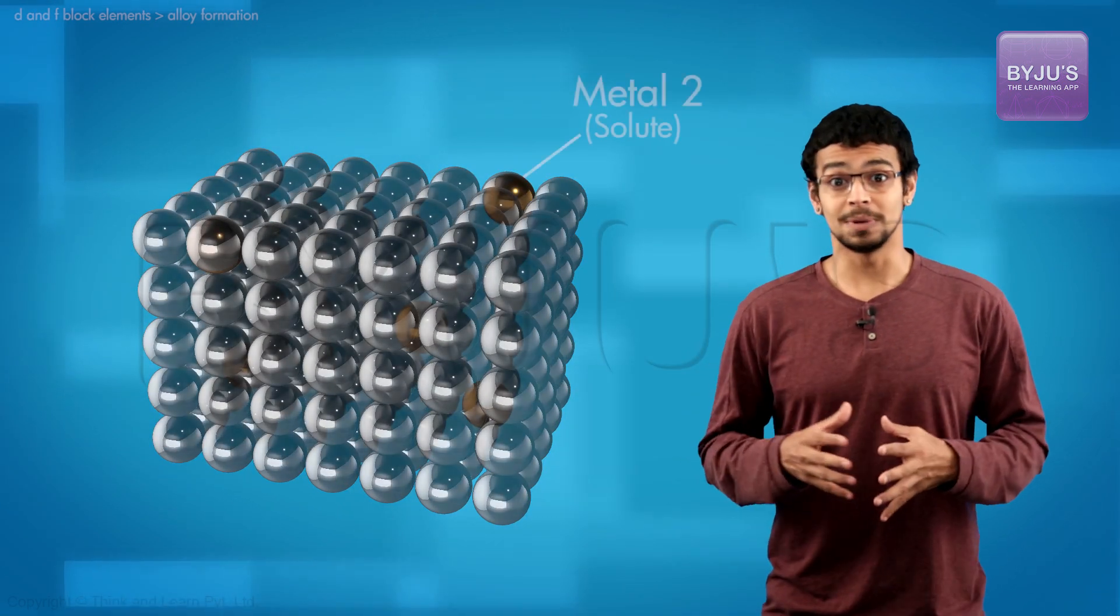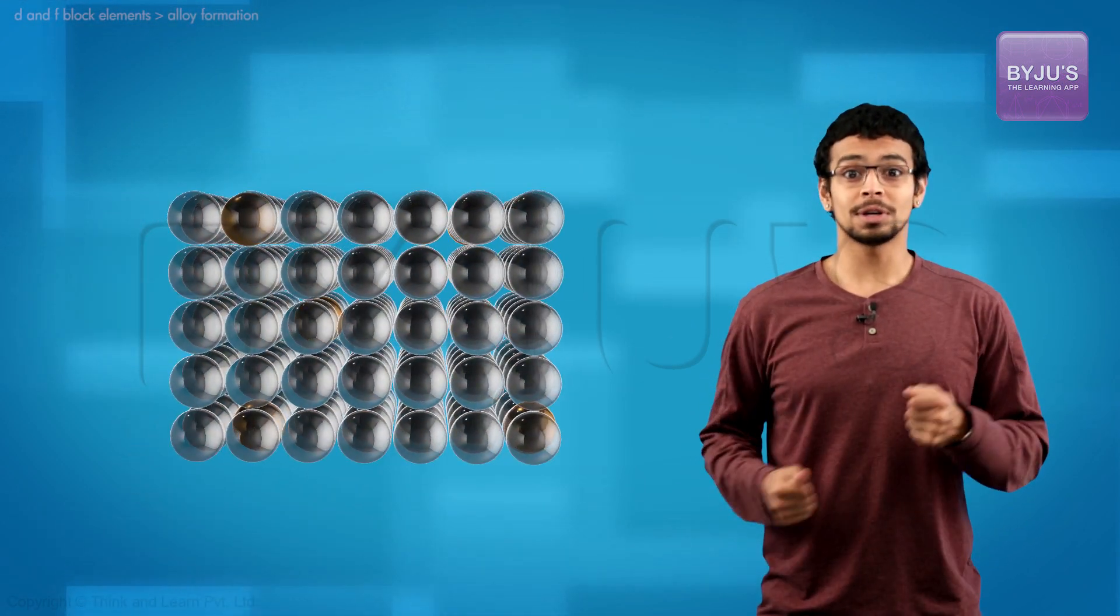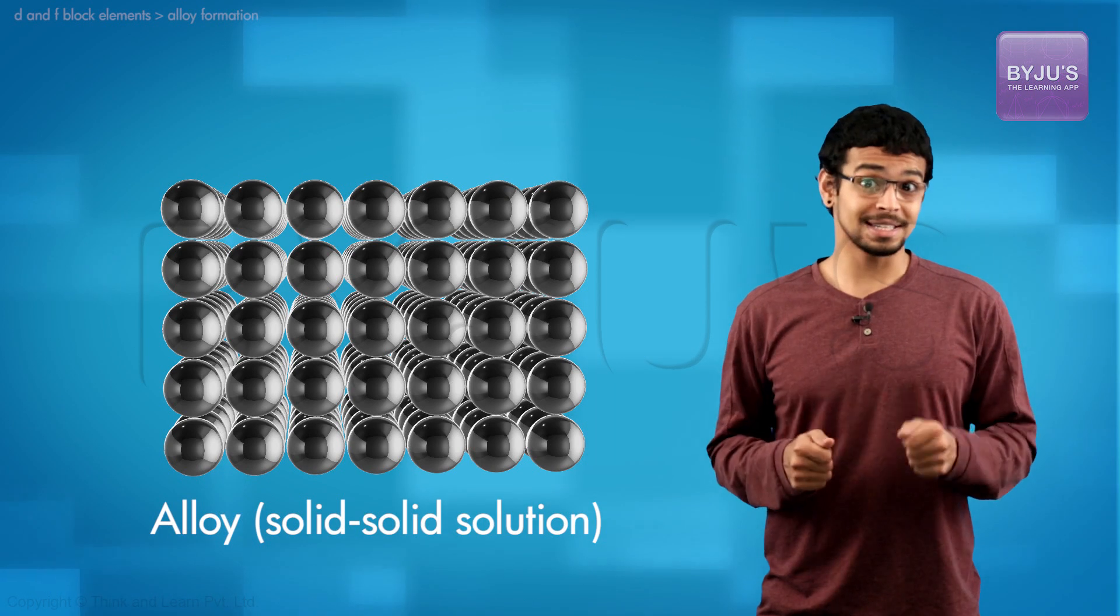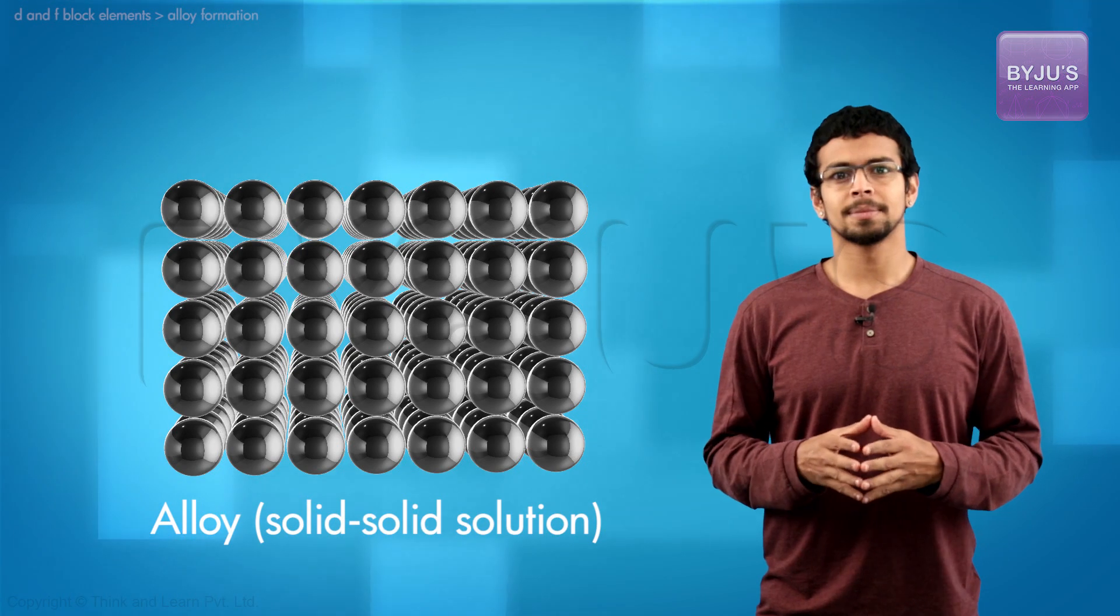Alloys are homogeneous mixtures with atoms of one metal randomly distributed among atoms of another metal. It's useful that the difference in sizes between the atoms is small and some other properties are similar. Transition metals are the right candidates for alloy formation.